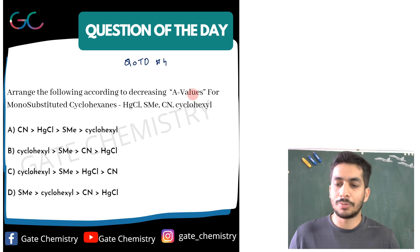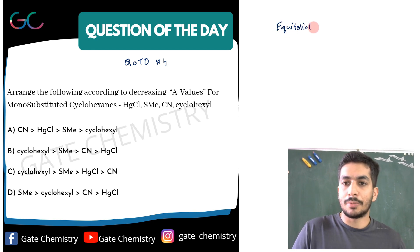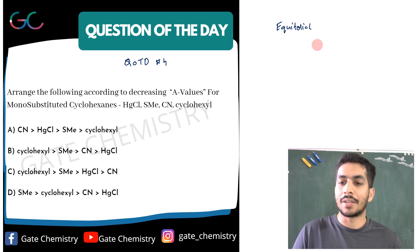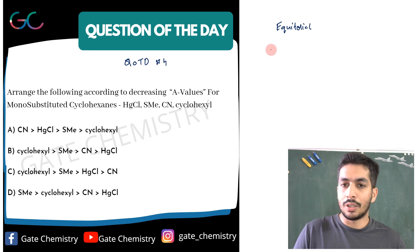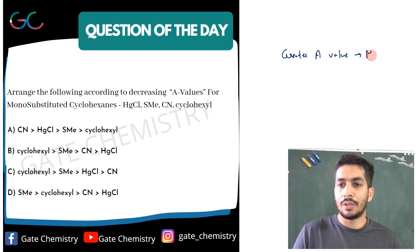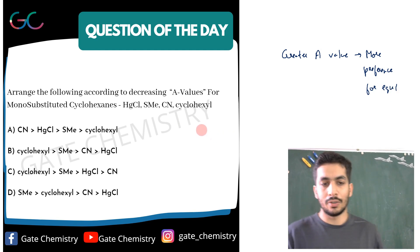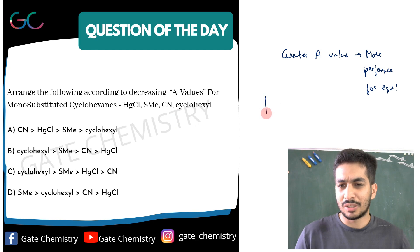What does the A-value tell us? The A-value tells us the preference of a substituent for the equatorial position over the axial position. In short: the higher the A-value, the more the preference for the equatorial position.